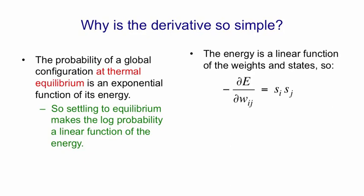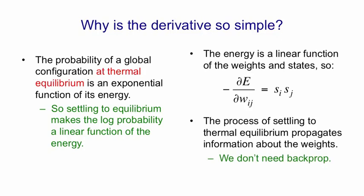In fact, the relationship is very simple. It's that the derivative of the energy, with respect to a particular weight w_ij, is just the product of the two activities that that weight connects. So what's happening here is the process of settling to thermal equilibrium is propagating information about weights. We don't need an explicit backpropagation stage. We do need two stages. We need to settle with the data and we need to settle with no data. But notice that the network's behaving in pretty much the same way in those two phases. The unit deep within the network is doing the same thing, just with different boundary conditions.